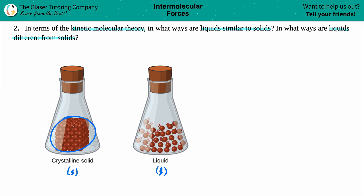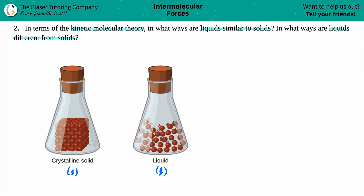Solids are more closely compacted and liquids are more free to roam. This is because solids have a definite shape, versus liquids have a shape that will mold into the container.